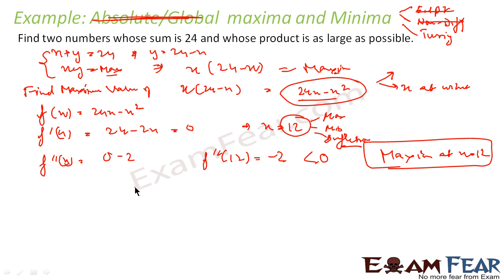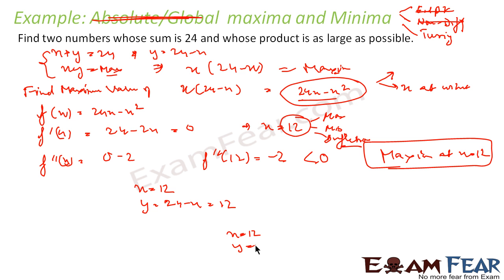To double-check, let us find f''(x). It is nothing but −2, and f''(12) = −2, which is less than 0. Since it is less than 0, the function attains maxima at x = 12. So x = 12, and y is nothing but 24 minus x, which is also 12. So x = 12 and y = 12 is my answer. x plus y equals 24 and x·y equals 144.